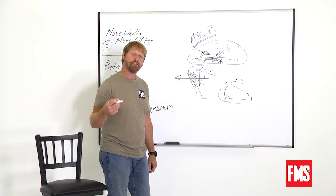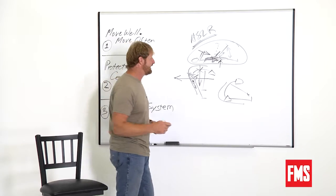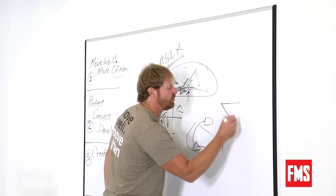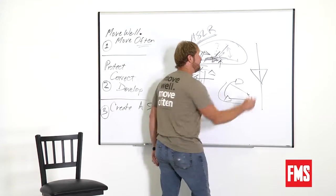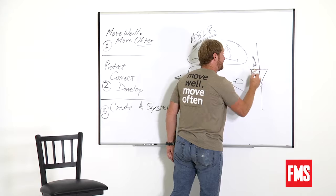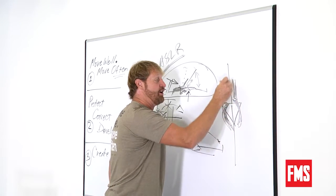Because once you find your glutes, you've reduced a thing called a lower cross syndrome. Look that one up too. A guy named Vladimir Yanda told us a long time ago, with a hip and spine, very often your low back extensors think they're your glutes. And your hip flexors think they're your abs.